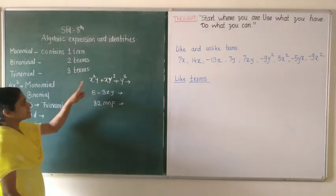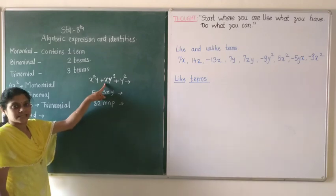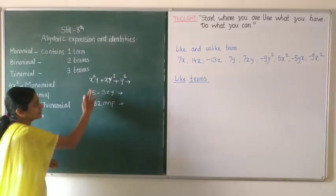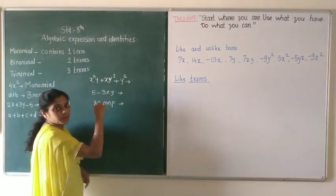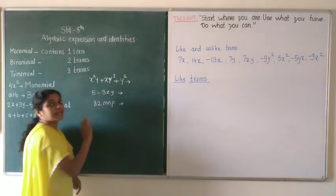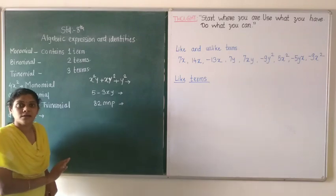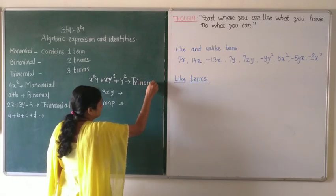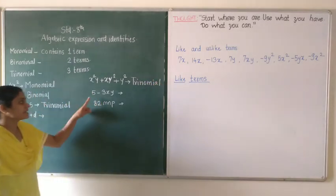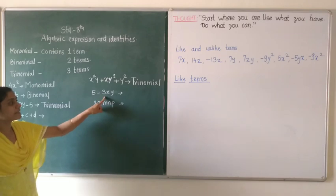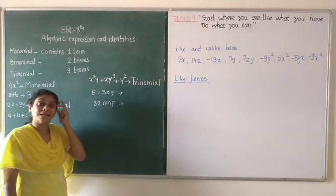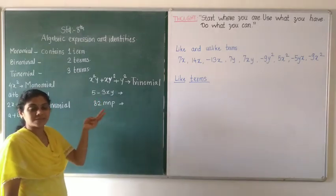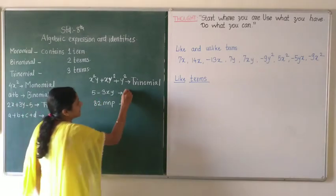The next is x squared y plus xy squared plus y squared. How many terms are there? One, two and three — three terms. That means it is a trinomial. The next is 5 minus 3xy. How many terms? Five and 3xy — two terms are there. That means it is a binomial.